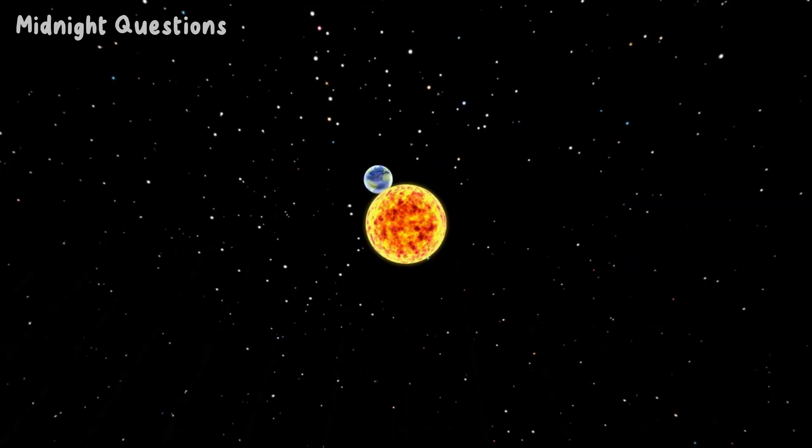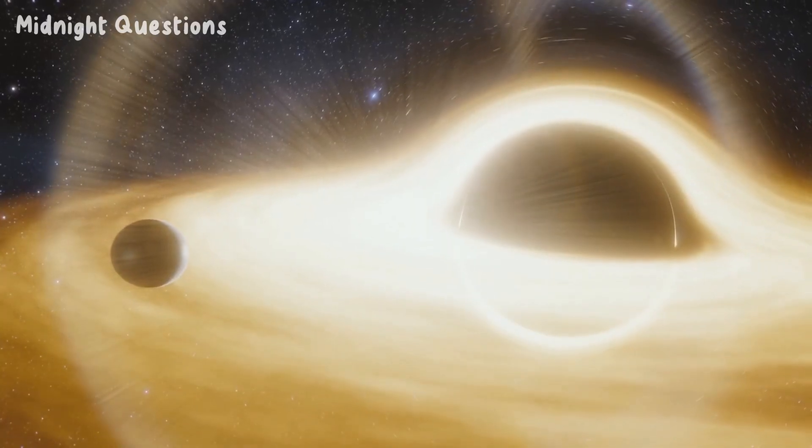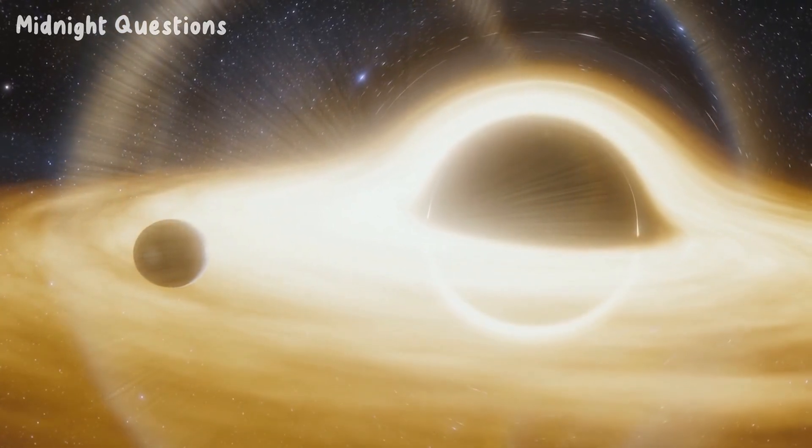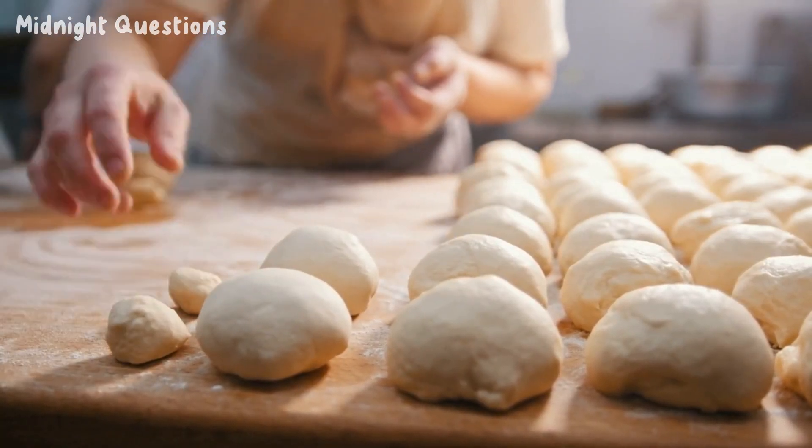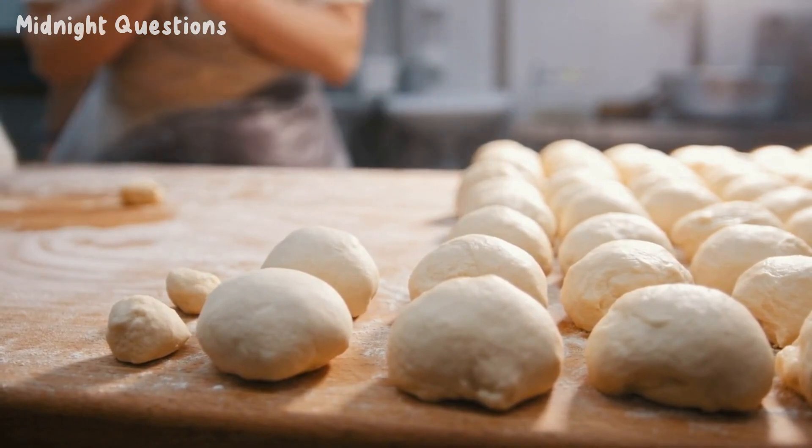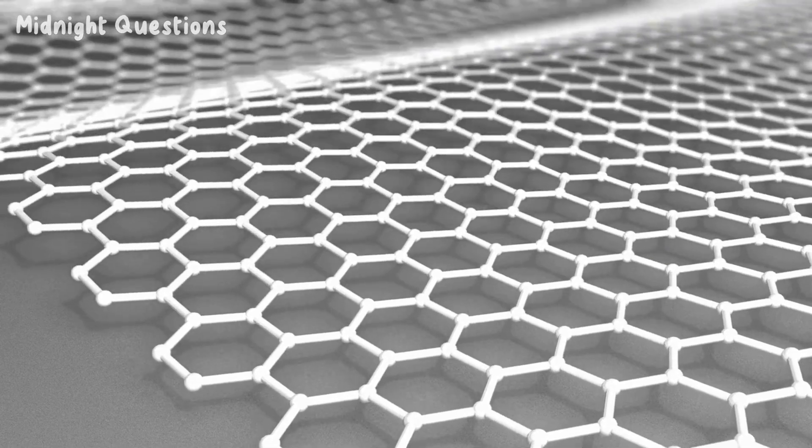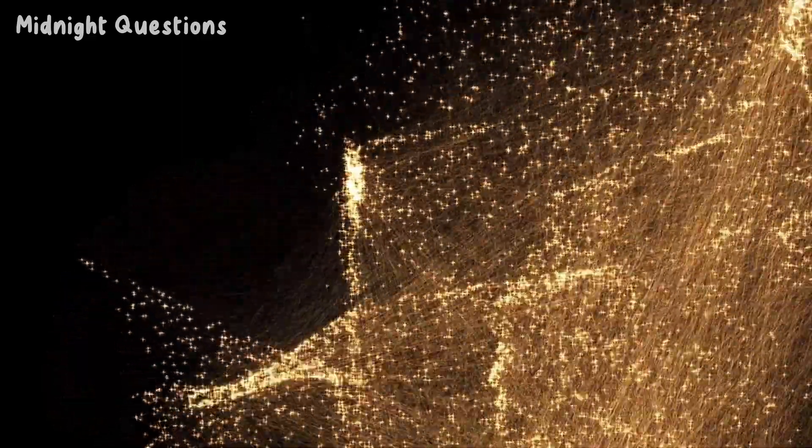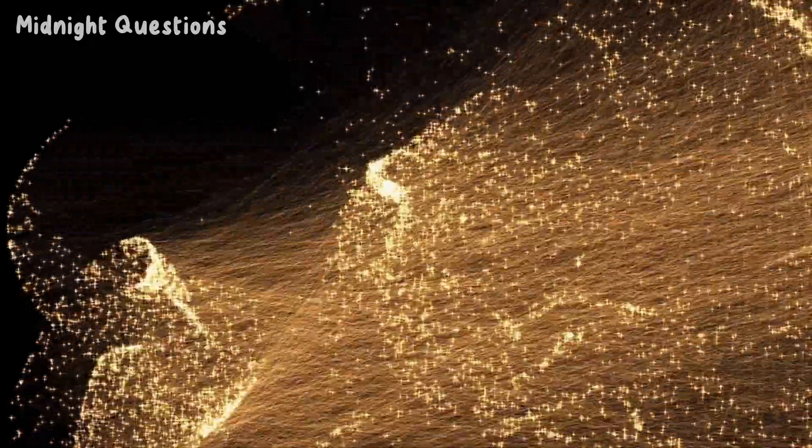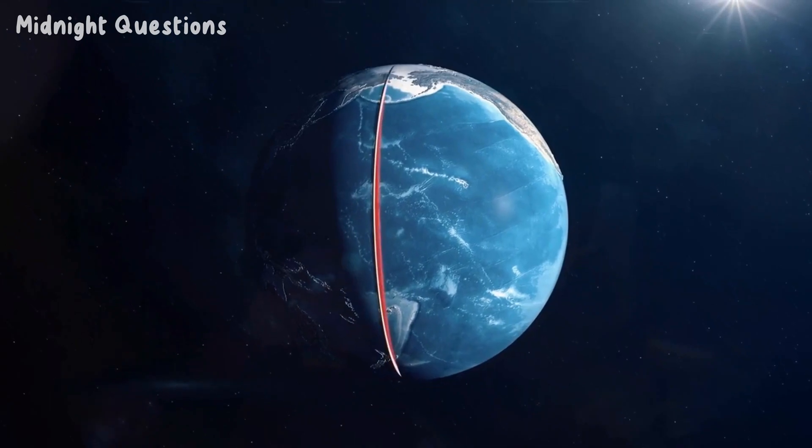There is another factor at play, known as gravitational potential energy. As the Earth formed, it began to contract under the force of its own gravity. This contraction caused the material in the core to heat up, just like a ball of dough heats up as it is kneaded. As the material in the core heats up, it becomes less dense and rises towards the surface. This rising material creates convection currents, which help to transport heat from the core to the surface. This process is known as mantle convection.